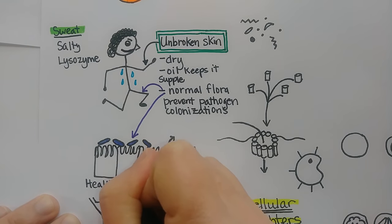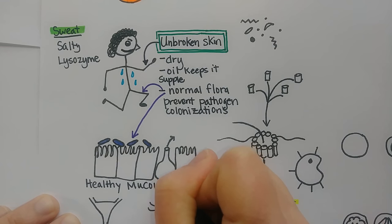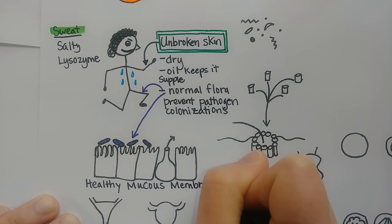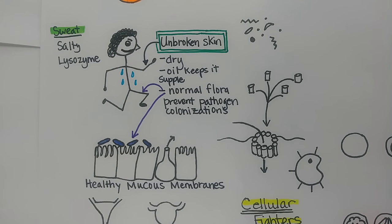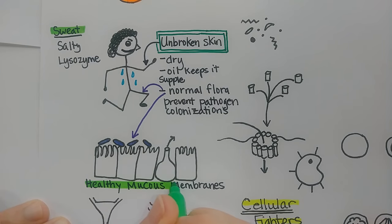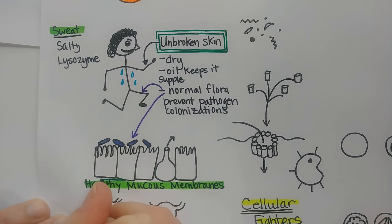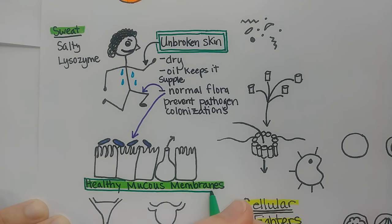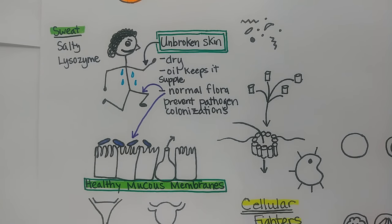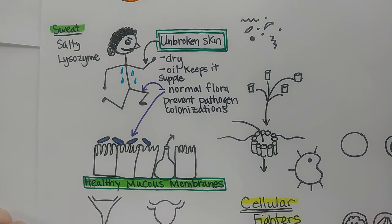Tears help keep the conjunctiva from becoming infected. If it gets too dried out — like on a windy day — someone can get conjunctivitis or pink eye. In males, the urinary and reproductive tracts are combined, since the penis has the urethra as well as the passage for semen. In females, there's a separate urethra and vagina.